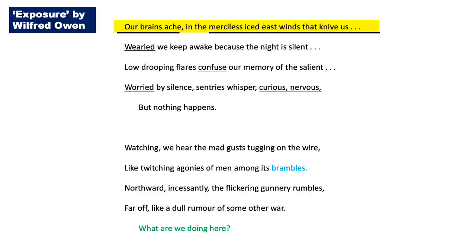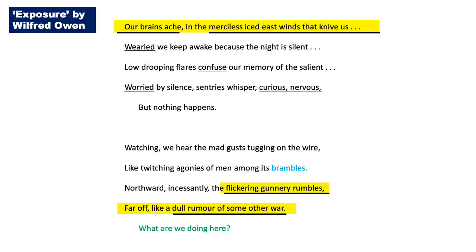In stanza two, we get more imagery associated with pain that has been caused by nature. The brambles of the barbed wire remind us of the pain that can be caused by nature. In line nine of the poem, we get vivid oral description. All the soldiers can hear around them is the sound of guns in the distance, which is emphasised by the adverb 'incessantly,' giving the impression that for these men the war seems never ending. The imagery here is emphasised by the onomatopoeia of 'rumbles.'